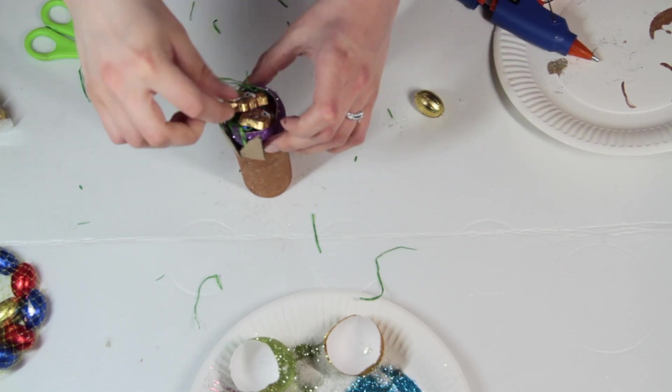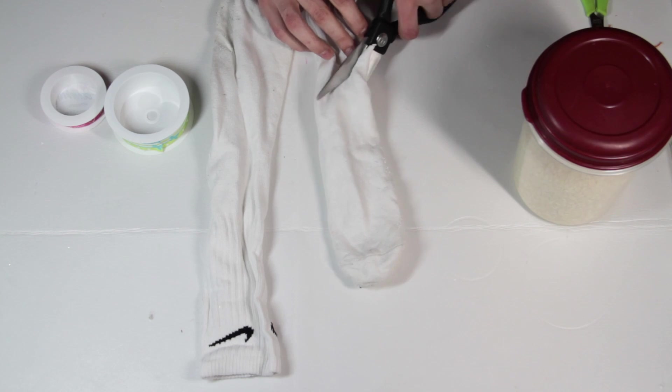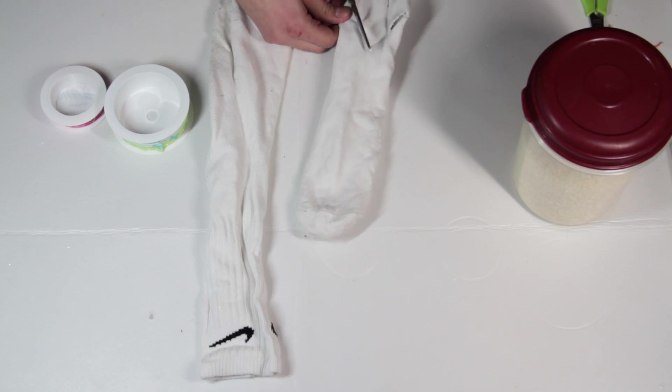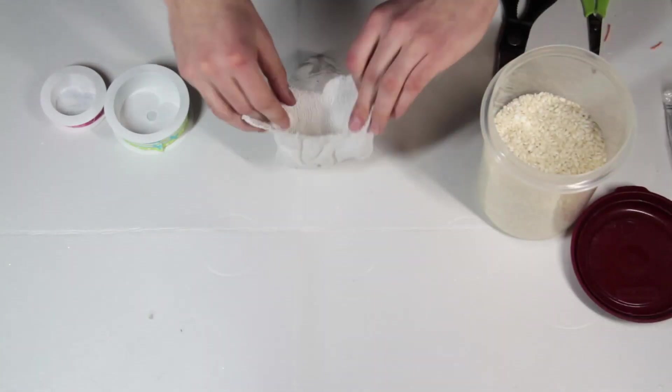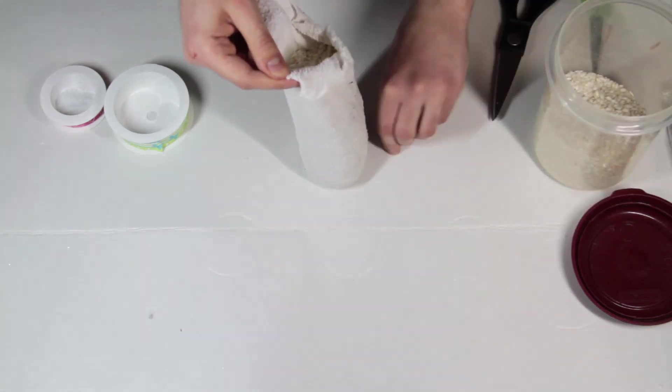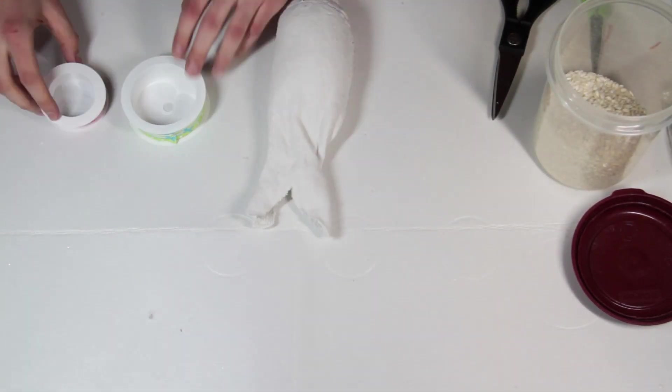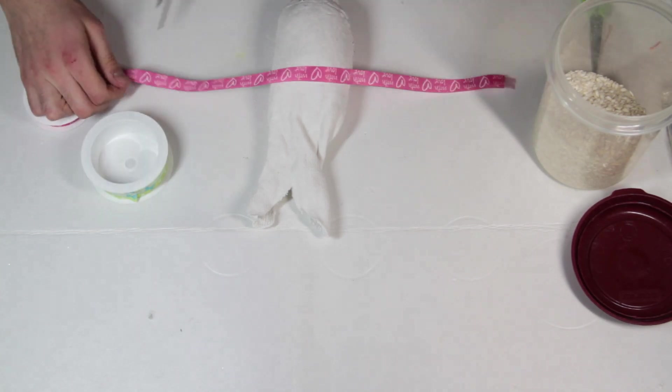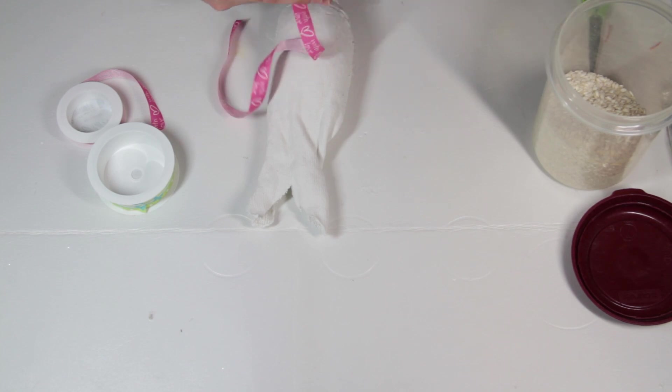For the third one, we're gonna take some old socks, cut out a triangular shape, and fill it with some rice. For the next step, we took some pretty ribbon to secure the ears, so the top part.